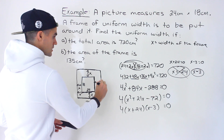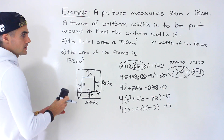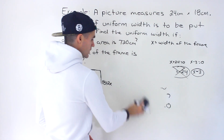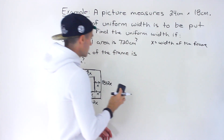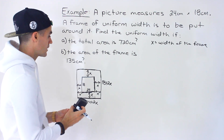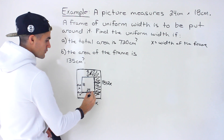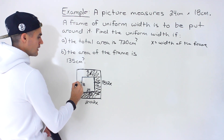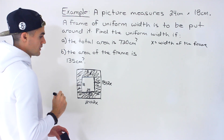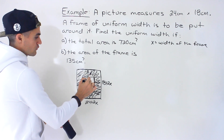Let's keep those measurements for part B. Part B is a little different because now we're dealing with the area of the frame only — not the total area. The shaded frame area equals 135 centimeters squared. The question is: how do we create an expression for just the frame area?